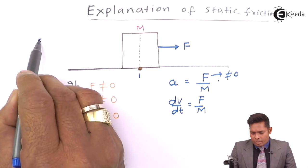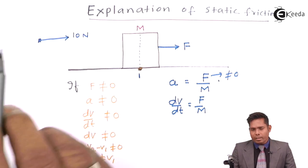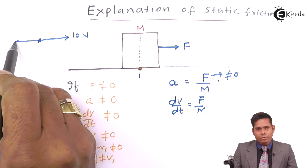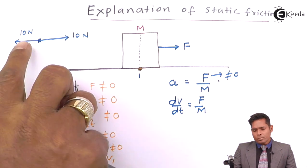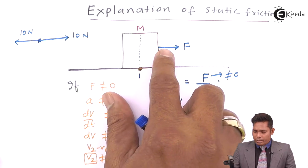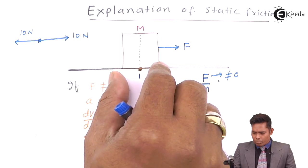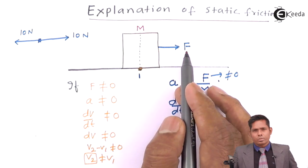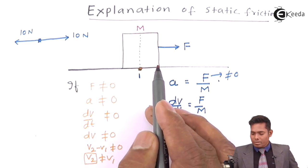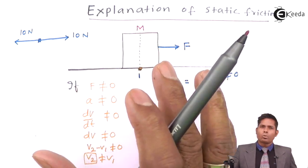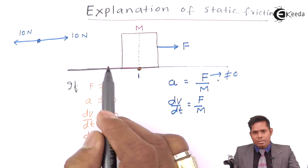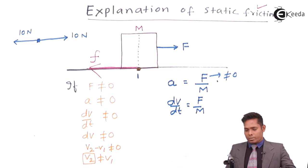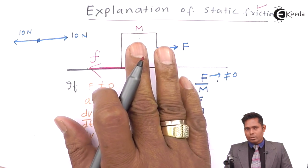For any particle acted upon by a force of, say, 10 Newtons, if it is not moving, then there must exist another force of 10 Newtons in the opposite direction — these two forces cancel out and the body does not move. In this case also, if a force is applied and the body is not moving, then there must be some other force acting on the body in the opposite direction to counterbalance this force. That force is known as the friction force. The frictional force counterbalances the applied force and the body remains at rest.